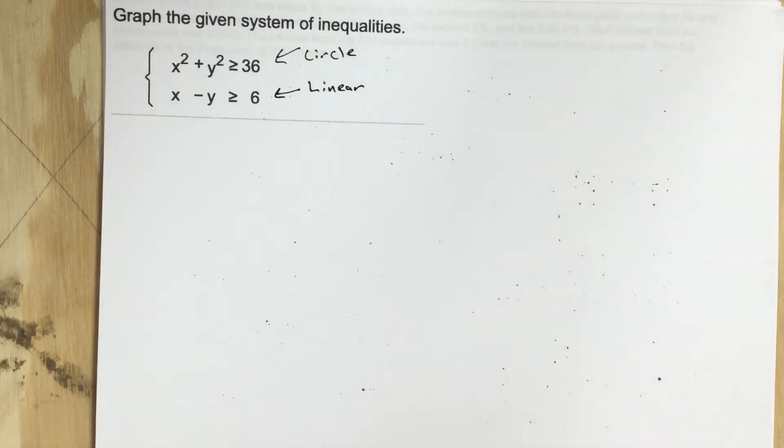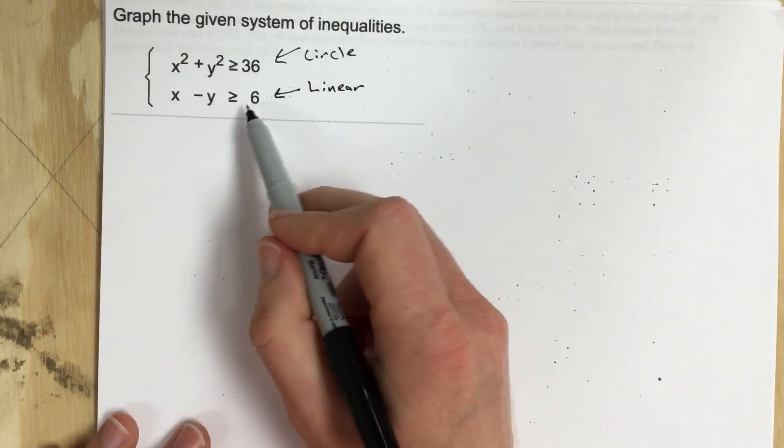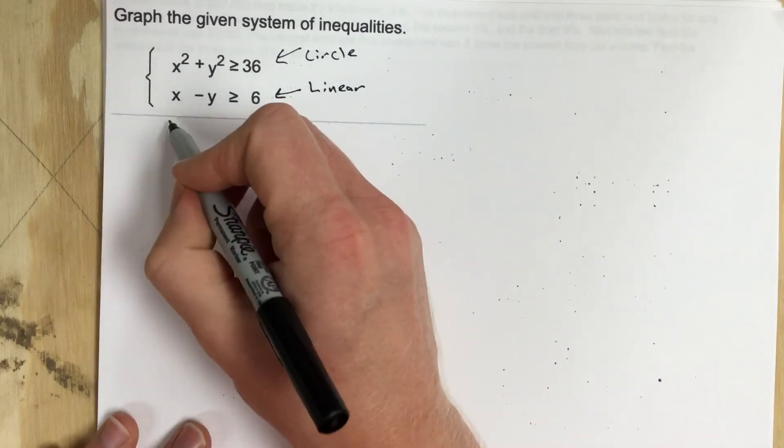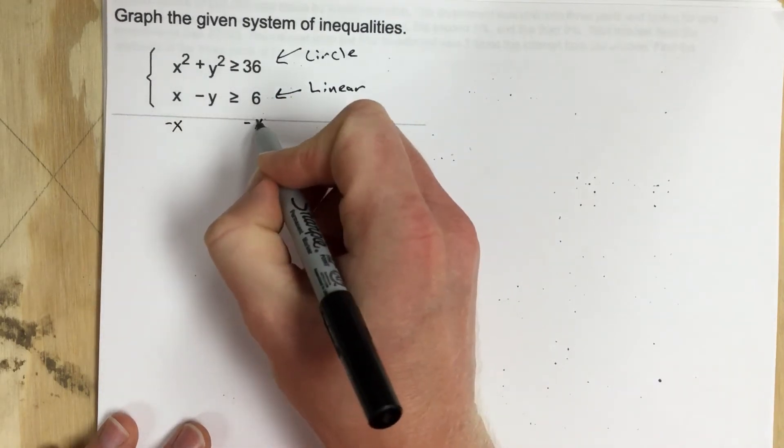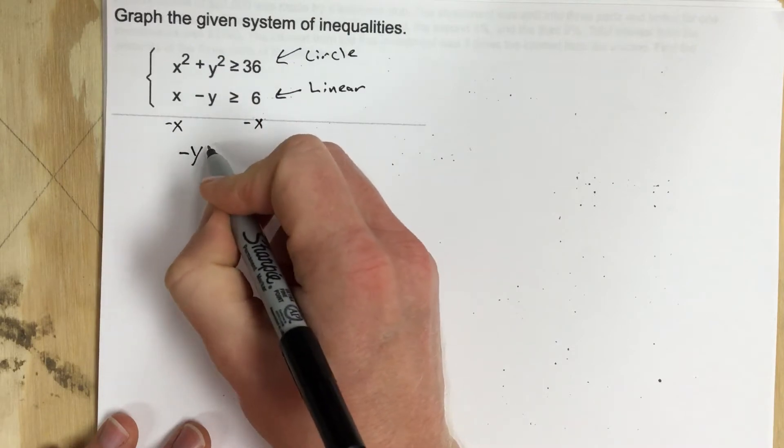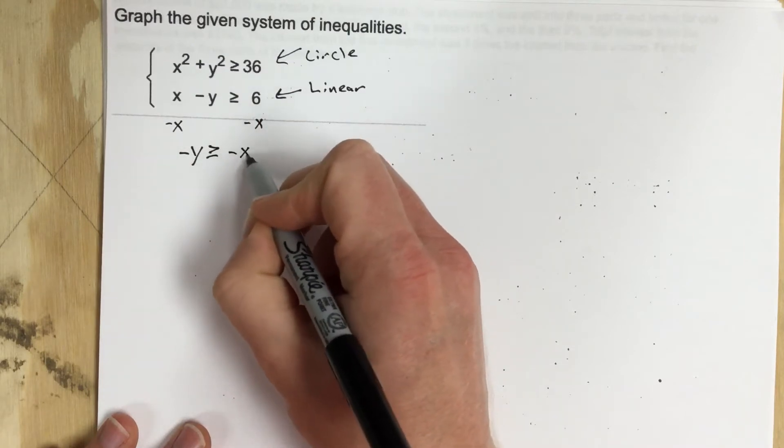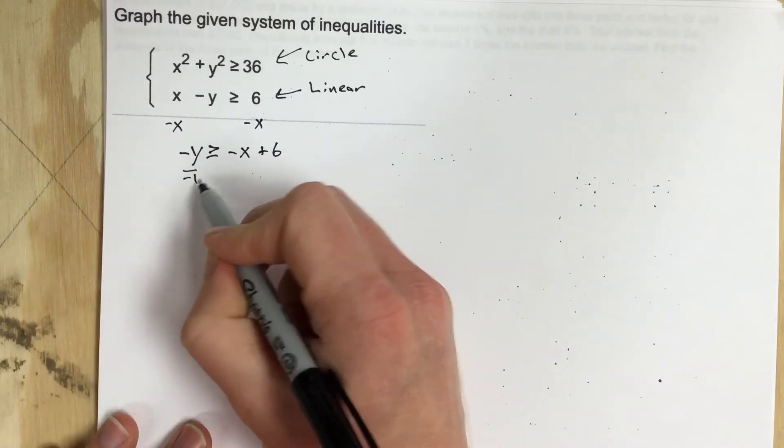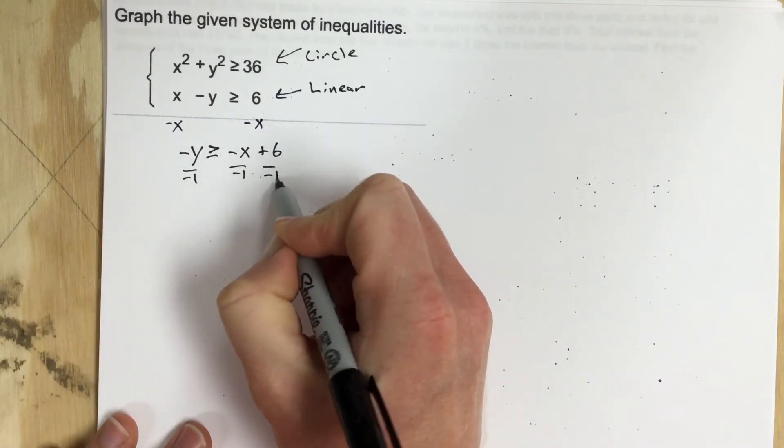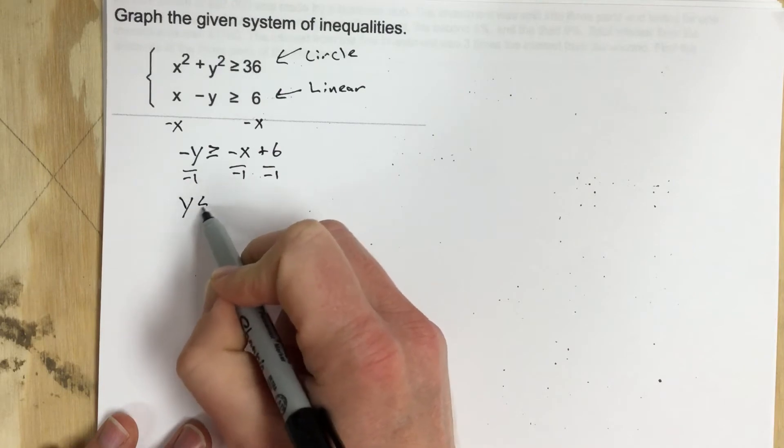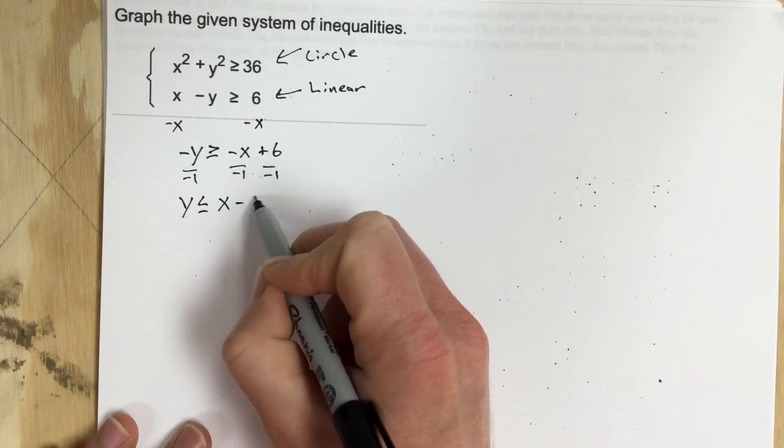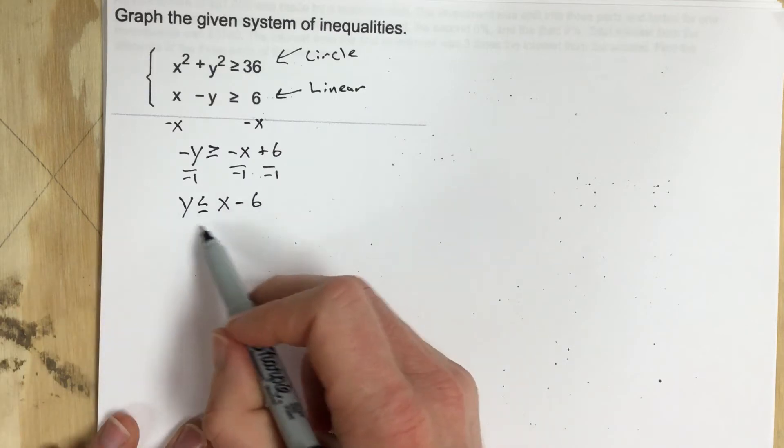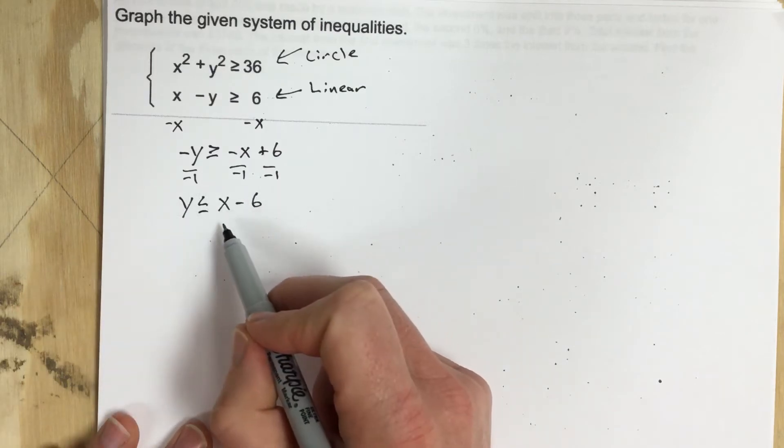So first thing I want to do is rearrange this linear equation so that I have it in slope-intercept form. I'm going to subtract x on each side. That's negative y greater than or equal to negative x plus 6. Now I'm going to divide by negative 1 and that's going to give you y less than or equal to x minus 6. So now we have this linear in slope-intercept form.